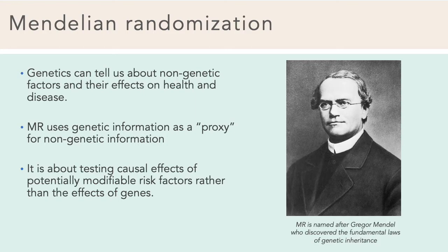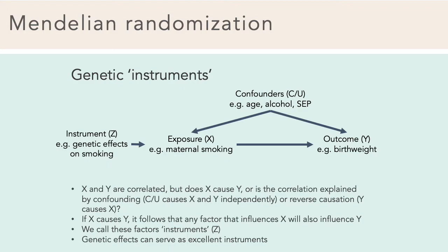The final approach is Mendelian randomisation — a technique based on the idea that genetics can tell us about non-genetic factors and their effects on health and disease. It uses genetic information as a proxy for non-genetic information, allowing us to test for causal effects in the presence of confounding. It's about testing causal effects of potentially modifiable risk factors — things like smoking, BMI, vitamin C — rather than the effects of genes themselves.